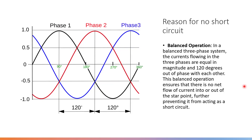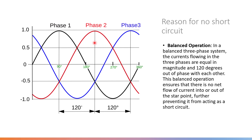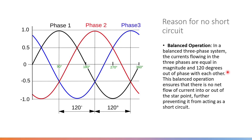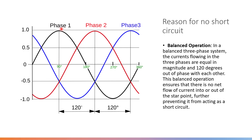Another reason is balanced operation. We all know this is the AC waveform, and these three phases are 120 degrees apart. If we connect these three phases together, at that point one phase may be high but the other two phases will be low. In this scenario the system will be balanced, and the net current flowing through the neutral point will be zero. Because of this phase shift, at any instance the sum of current will be zero. This is another reason for no short circuit in the star connection.